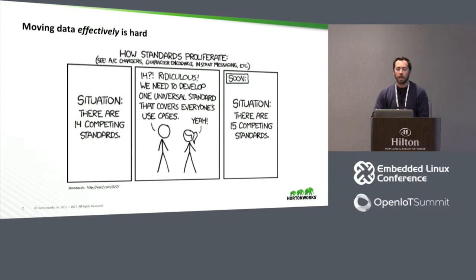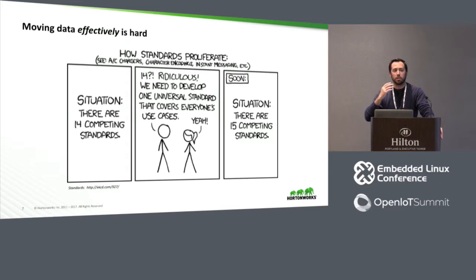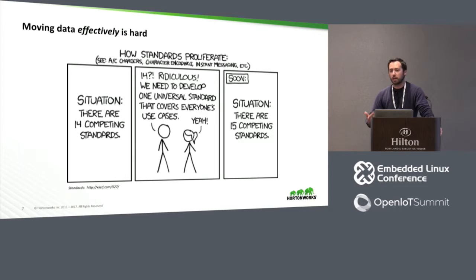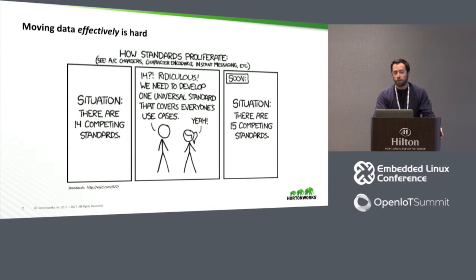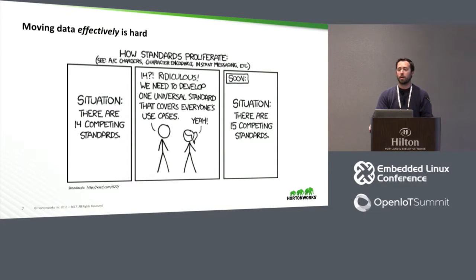Moving data effectively is very hard. XKCD has an example for every problem in the world, and this is one of the key ones: there have been so many evolutions of this problem, so many different people and organizations have tried to solve it, that we have all these competing standards. The next person is going to come along and say 'I have a better idea' and now we just have another competing standard. NiFi tries to be very conservative in what we do, but liberal in what we accept and integrate with whatever is out there.